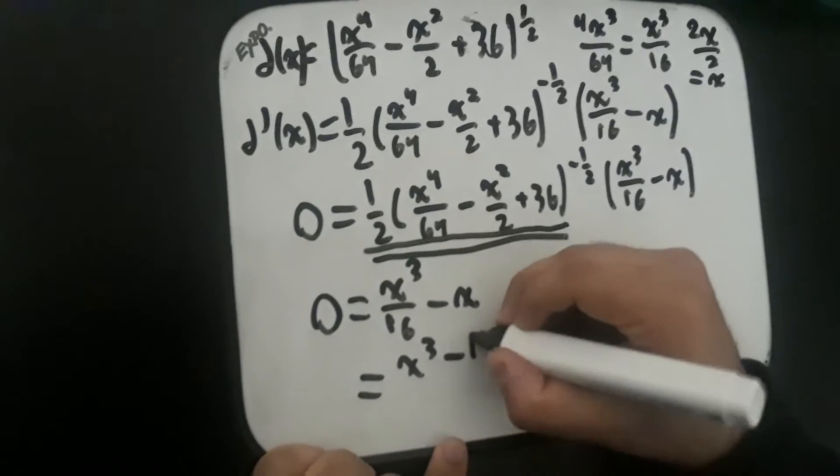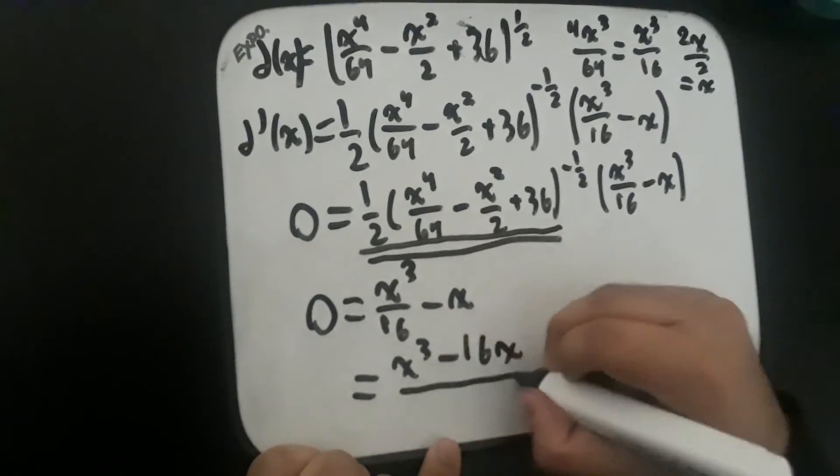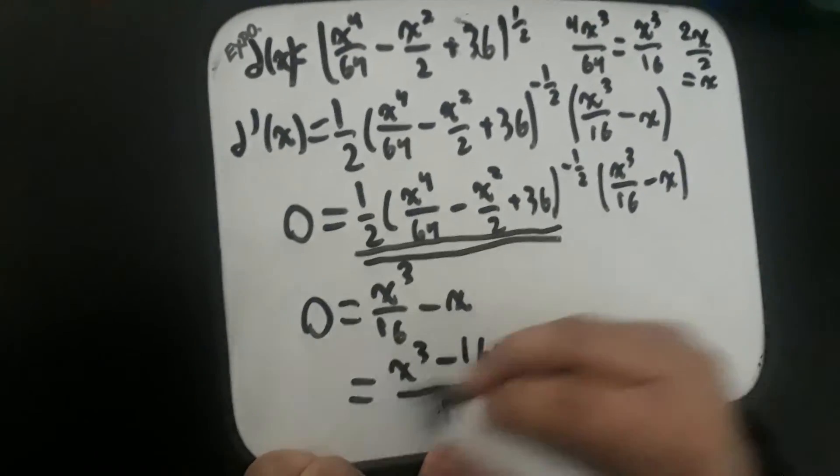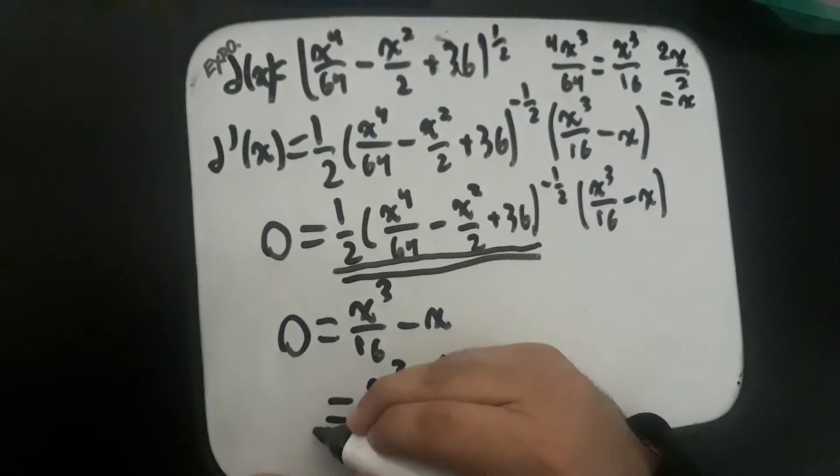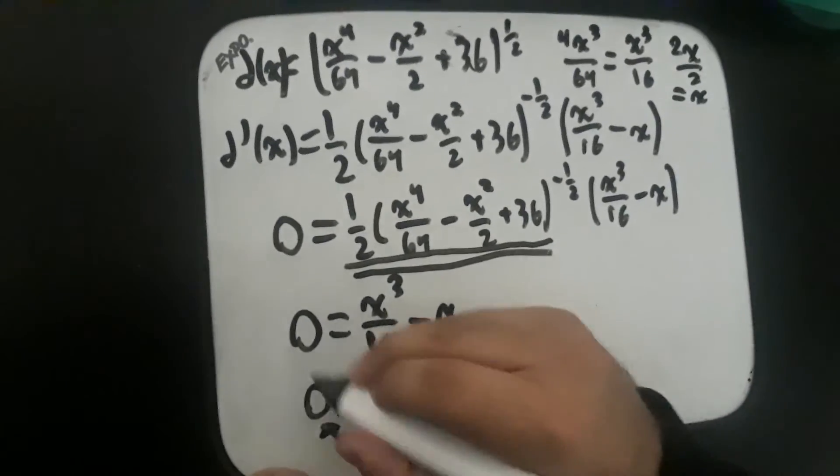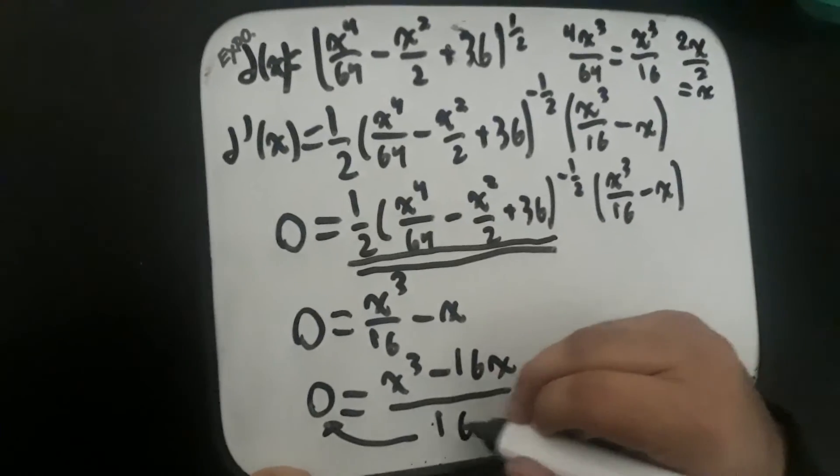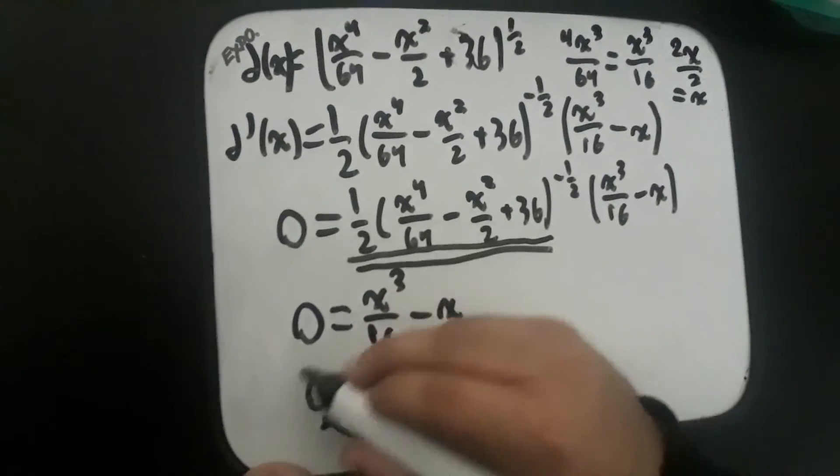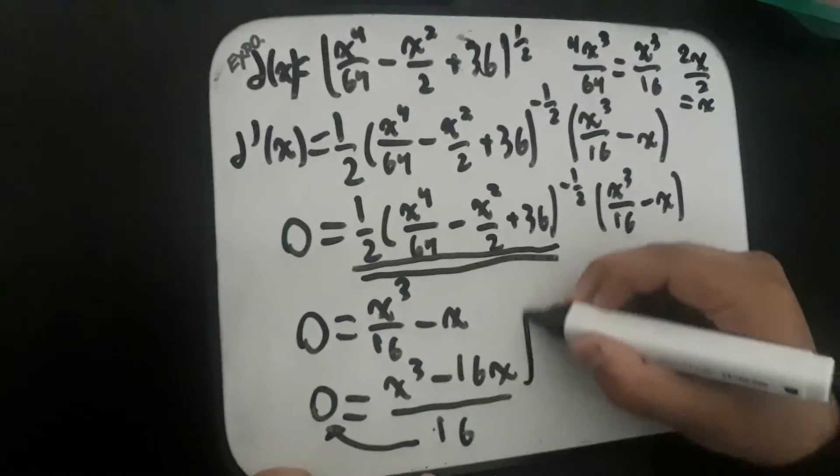And so now if we multiply this by 16, we would get a common denominator for them both. So it becomes (x cubed minus 16x) over 16. You multiply the 16 over on both sides which cancel out here, and it becomes 0 times 16 over here, which of course is equal to 0.